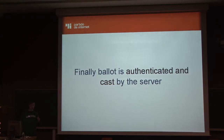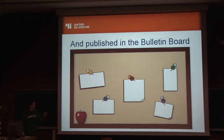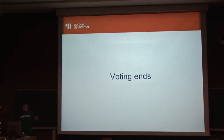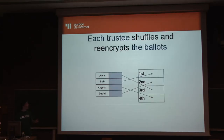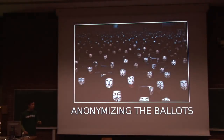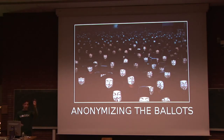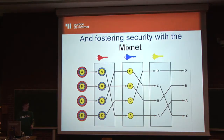When you send your ballot — created on your computer, even without internet using a live CD if you want — it is authenticated using your signature, cast by the server, and published on the voting board for everyone to see. Then voting ends and the tally begins. The trustees start working: each trustee shuffles and re-encrypts the ballots so they are anonymized. This is what we call a mixnet.